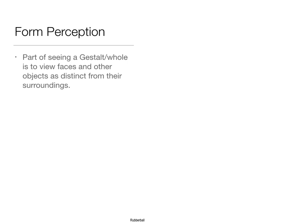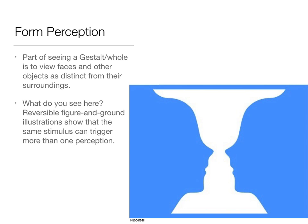Here's a famous reversible figure-to-ground illustration where one image gives you two different perceptions. You can see either a white vase as the figure on a blue background, or two blue faces looking at each other on a white background. The stimulus is not changing; the sensation is not changing. What's changing is your perception of that sensation — what you're pulling out as figure and what you're treating as ground.